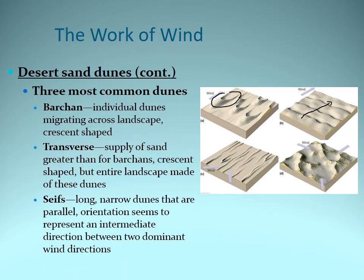With the seif, which is the third kind, we have to have two dominant wind directions and these wind directions must converge. For example, in the deserts of southeastern California, in the wintertime we often get winds coming from the southwest, but in the summertime, due to the monsoons, we often get wind coming from the southeast. So this can create long, narrow dunes.